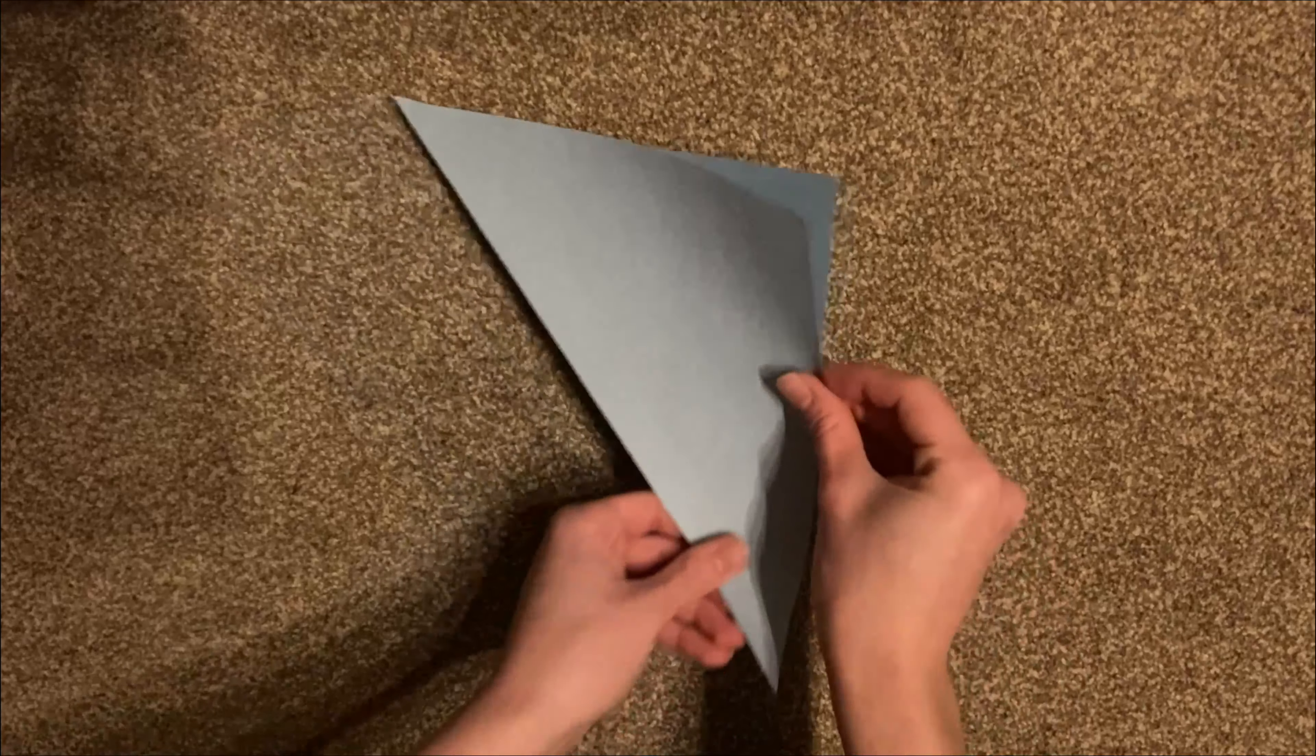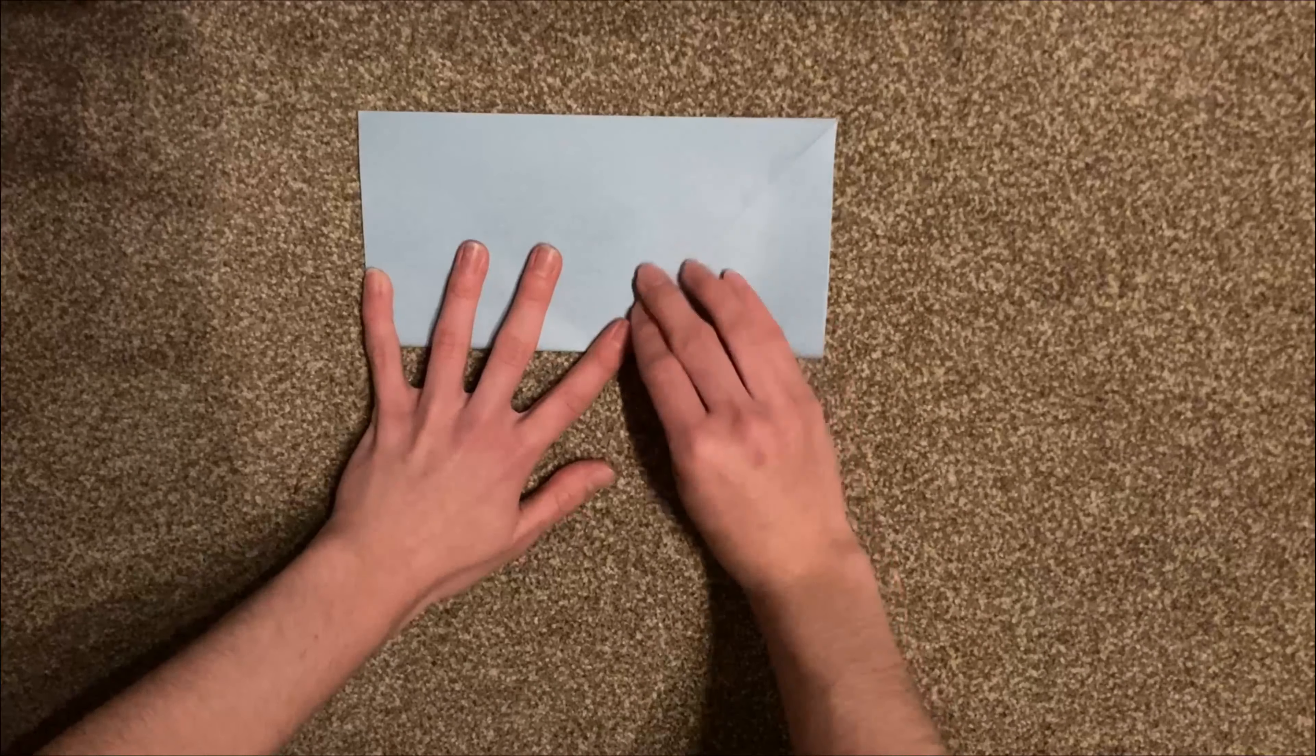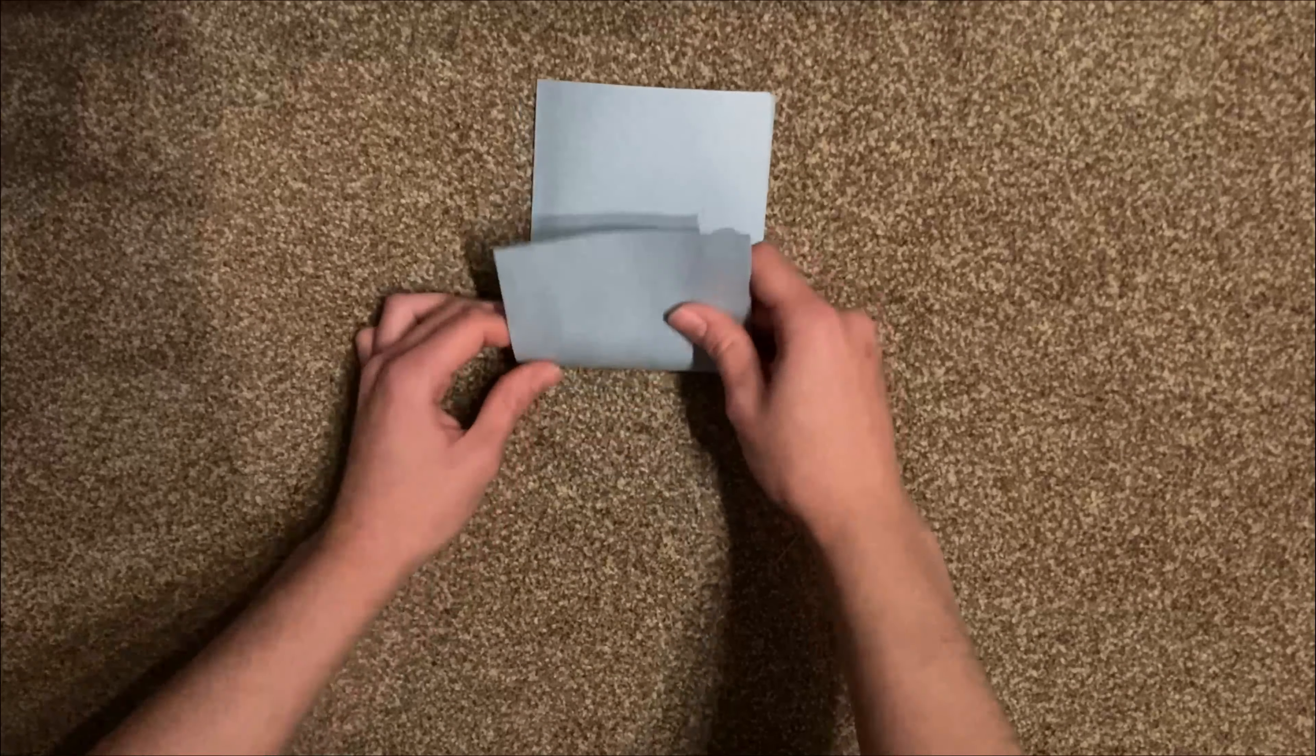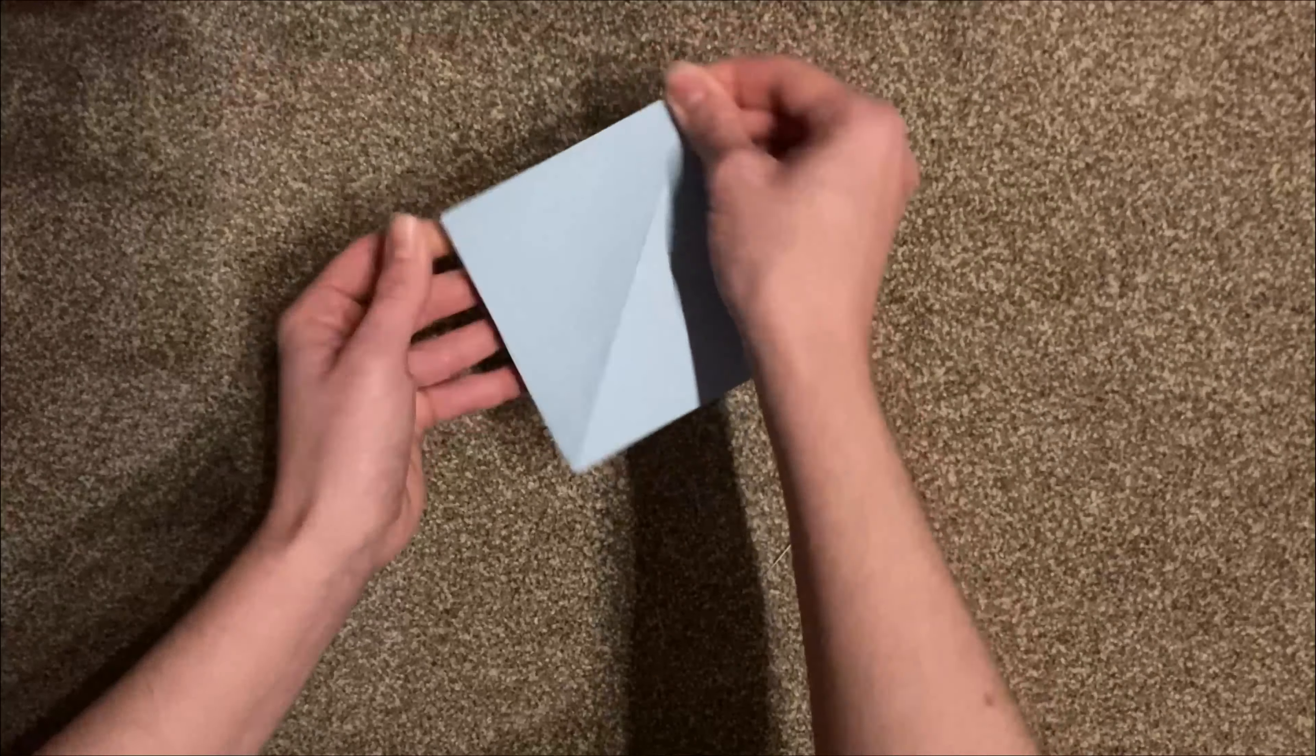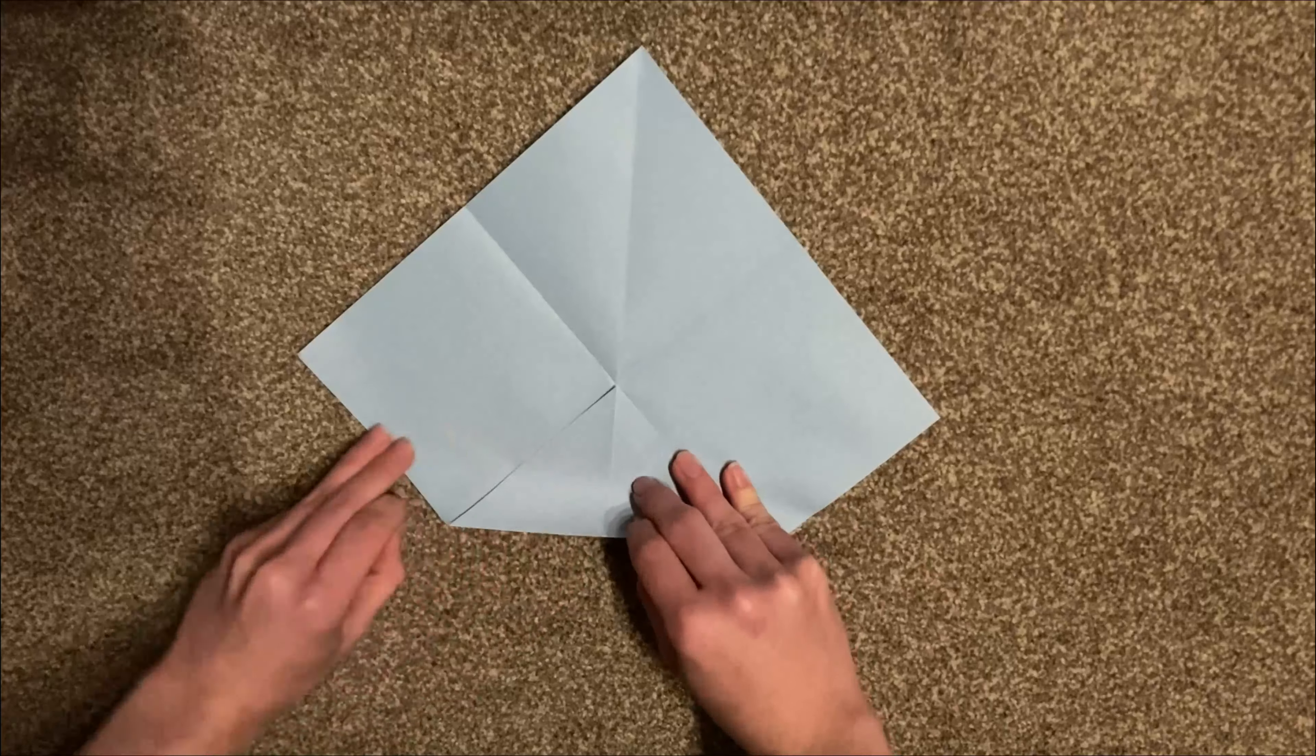Now you fold the square in the middle twice, meaning you cut it in half so that you have a square with four smaller squares at the end. Now you fold all four corners to the inside so that you have a smaller square at the end.